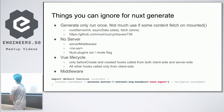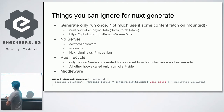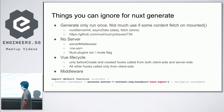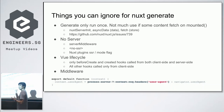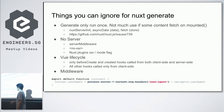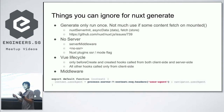For Nuxt generate, since generation runs only once, some lifecycle features are pretty useless: `nuxtServerInit`, `asyncData`, and `fetch` — instead you do your calls in the `created` or `mounted` hooks as usual. There's also no server middleware needed. The `<no-ssr>` tag is useless since there's no server, and plugins that can't handle SSR because they use the window object don't need special handling either.